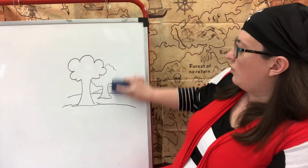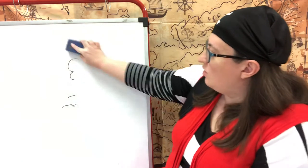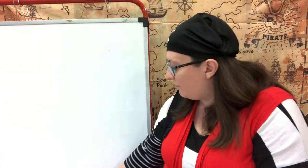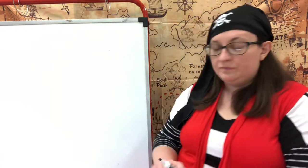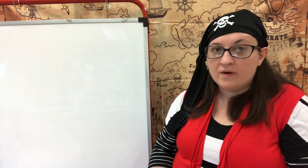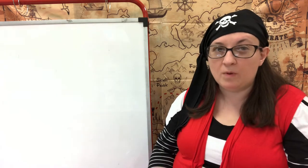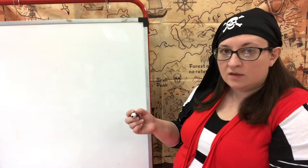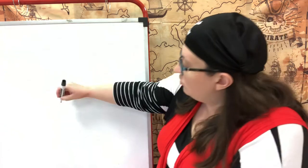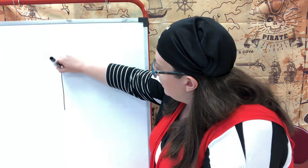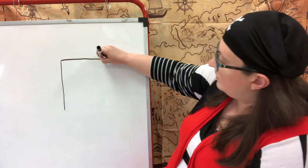For our pirate ships we are going to create a foreground, a middle ground, and a background. So what I want you to do is get out a piece of paper - a white piece of paper would be good if you have one - and a pencil. I'm going to draw my imaginary paper right here. We're going to pretend this is Miss Hoffman's paper.